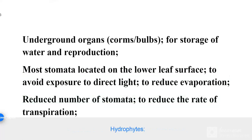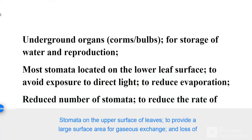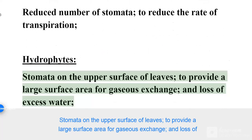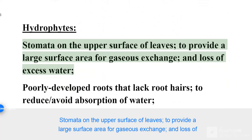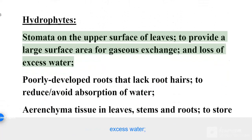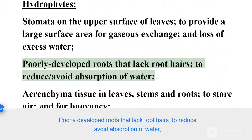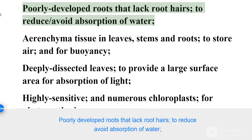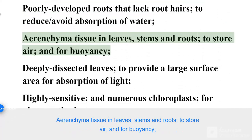Hydrophytes. Stomata on the upper surface of leaves to provide a large surface area for gaseous exchange and loss of excess water. Poorly developed roots that lack root hairs to reduce and avoid absorption of water. Aerenchyma tissue in leaves, stems and roots to store air and for buoyancy.